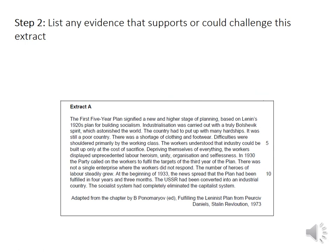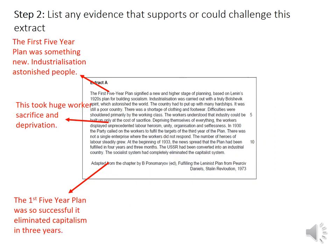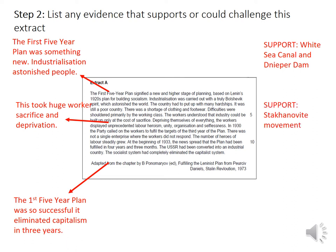The second step is to list any evidence that supports or could challenge this extract. On the right-hand side, think about what evidence you might use to support or challenge those arguments. For the first argument — that the five-year plan was something new and astonishing — the best evidence is the Bolsheviks building the White Sea Canal and the Dnieper Dam. For the second argument about huge workers' sacrifice and deprivation, I've got great evidence about the Stakhanovite movement. For the third argument — that the five-year plan was really successful — I could use evidence about heavy industry to support, but I could challenge it by pointing out there was hardly any light industry.